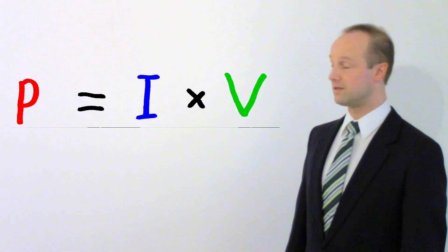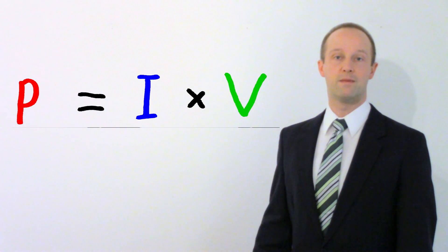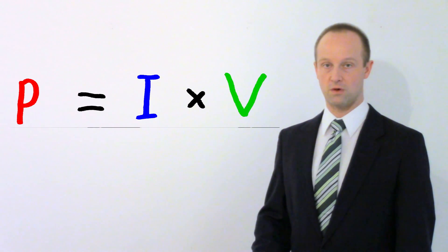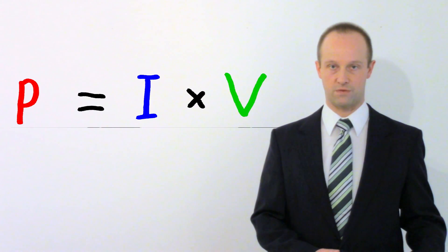So how does a transformer make the distribution of electricity more efficient? Well it all comes down to this equation. P equals I times V. That is power equals current multiplied by potential difference. The amount of power you put into a transformer is always pretty much the same as the amount of power you get back out of a transformer.